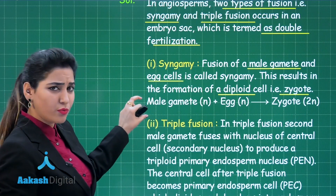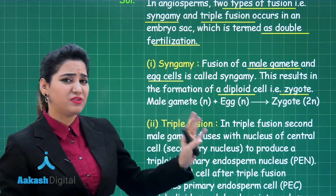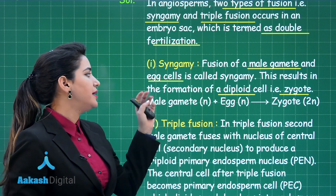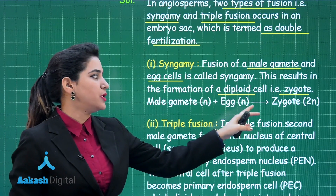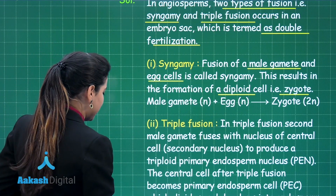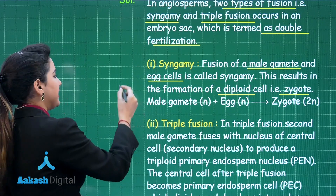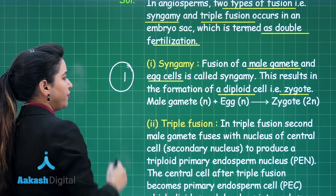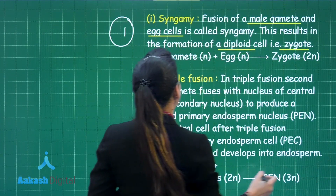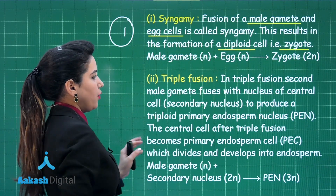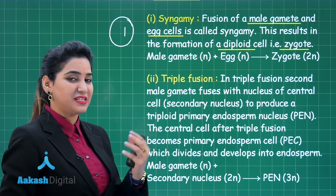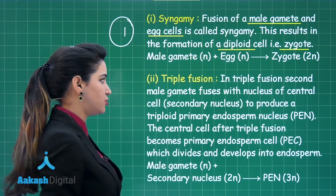From the equation: male gamete (haploid) plus female gamete which is the egg (haploid) will produce a diploid zygote. For writing syngamy, the first type of fusion, you will get one mark. Then we have triple fusion, the other kind of fusion — here three nuclei are participating, which is why the name triple fusion is given to it.